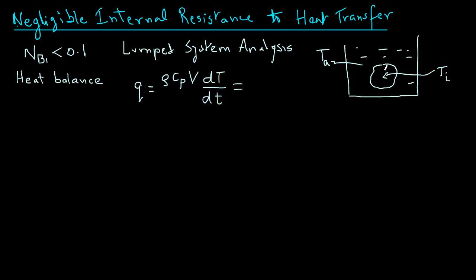That heat is transferring from the surrounding environment through the surface of this object. So we can equate this to h — the convective heat transfer coefficient at the surface — times the surface area A of that object, times Ta (the surrounding air temperature) minus T, where T is the temperature of the object at any time. So we have the differential equation: rho Cp V dT/dt = h A (Ta minus T).